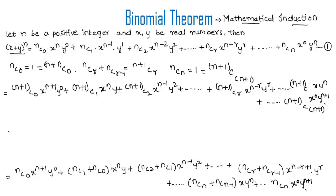Comparing this result with the original statement, we observe that it matches with n replaced by n + 1. Since we proved the statement is true for n = n + 1, it is true for all natural numbers n ∈ ℕ. This is how we proved the binomial theorem. Hope you understood the concept. Refer to more videos on binomial theorem at vtchacademy.com. Thanks for watching, have a good day.